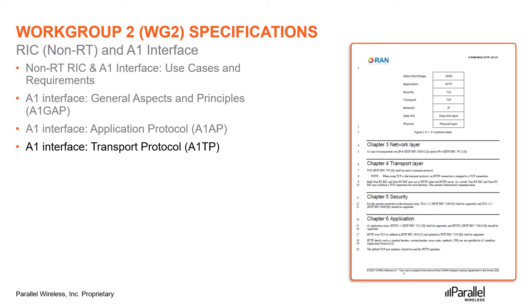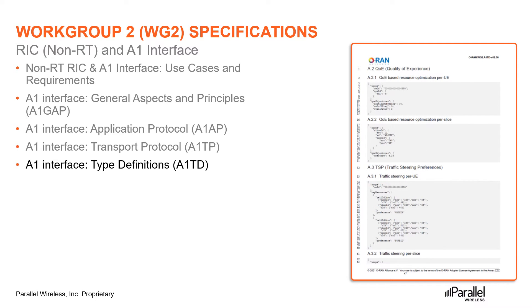The Transport Protocol document specifies the transport protocol of the A1 interface. The Type Definitions document is the final of the four technical specifications for the A1 interface. It specifies the data model and the data types used in the body of the procedures in the A1 interface. Chapter 5 describes policy type compatibility while chapter 7 describes EI type compatibility. For compatibility of A1 implementations in non-RT and near-RT RICs, it must be ensured that all implemented policy and EI types are compatible with each other.